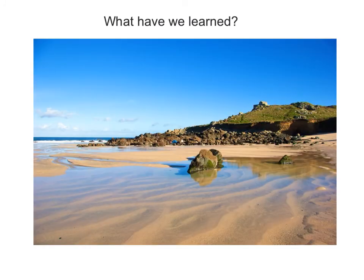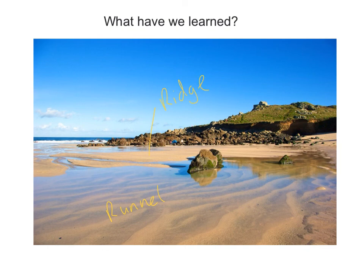So what have we learned? If this photograph were in an A-level exam paper, a typical question might ask what features can be identified and to explain how they're formed. You should be able to identify the runnel — the body of water between the ridge and the beach — and some ripples within the water, formed as the tide ebbs.